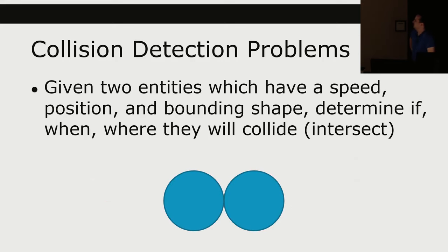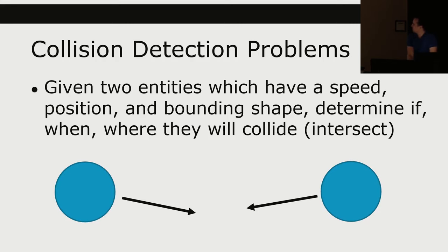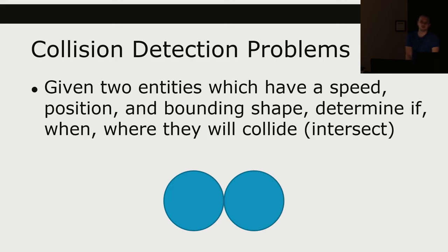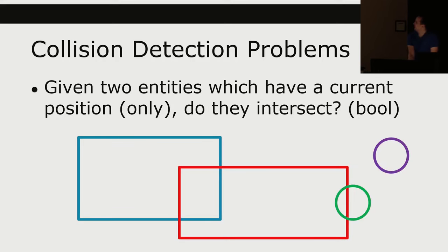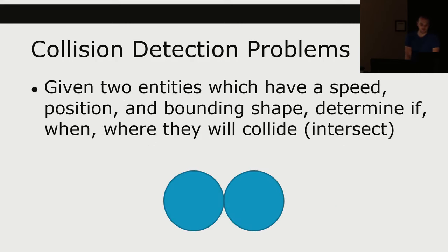Rather, given two entities with a current position, do they intersect? And if they intersect, then do something with it. We're not doing the case where we have to figure out, in the future, where they might collide — that is useful in some cases, but not in our simple games. So we're going to be doing things like: if we have two entities on this frame, do they collide? And later we'll talk about, if they're colliding, what do we do to resolve that situation?